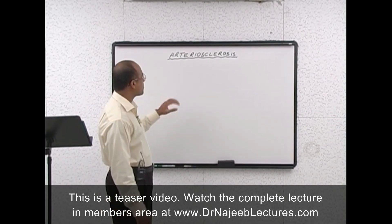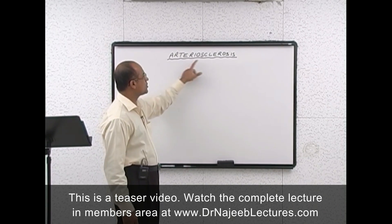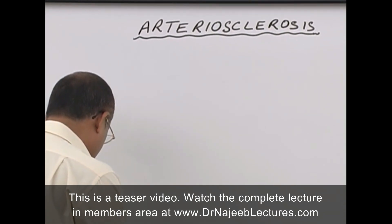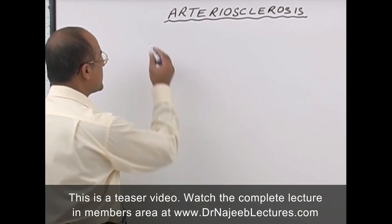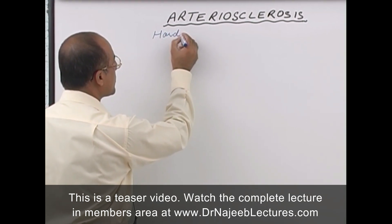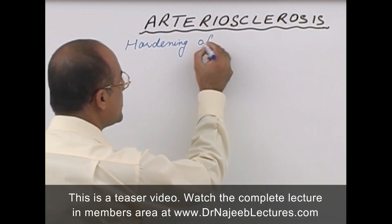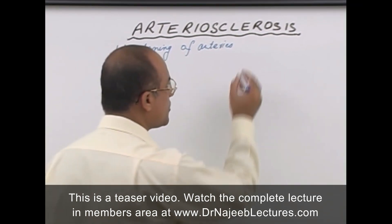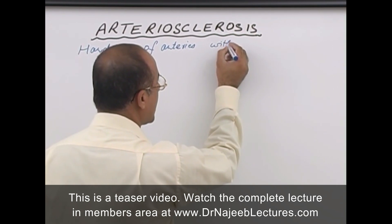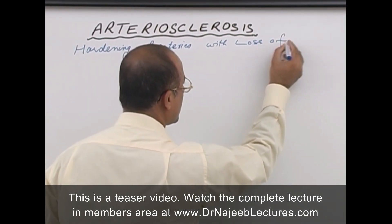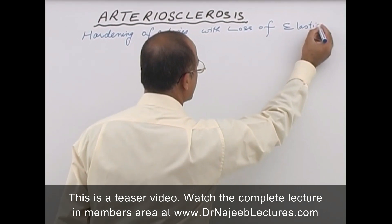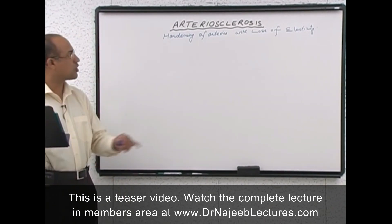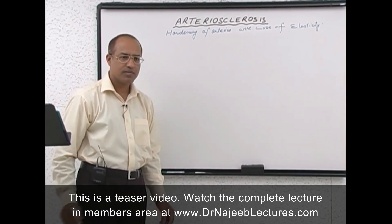Today we are going to discuss the topic of arteriosclerosis. What is really the meaning of arteriosclerosis? Arteriosclerosis means hardening of arteries with loss of elasticity. It's a general term — arteriosclerosis means hardening of the arteries with loss of elasticity.